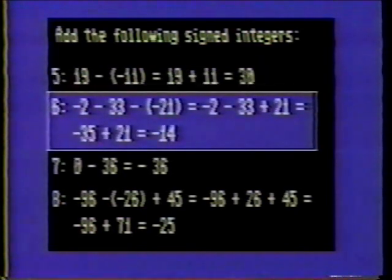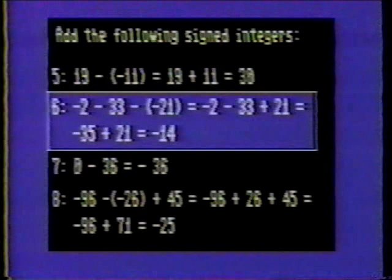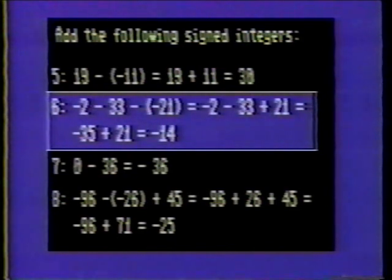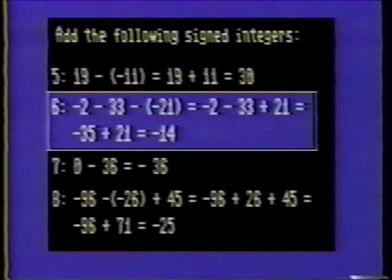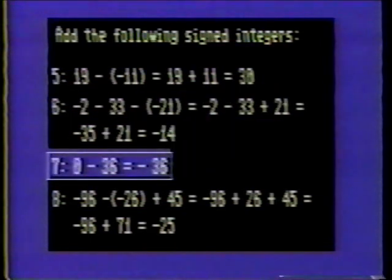Number six: negative two minus thirty-three minus negative twenty-one is negative two minus thirty-three plus twenty-one. Combining numbers with like signs yields negative two minus thirty-three, which is negative thirty-five. Negative thirty-five plus twenty-one is negative fourteen. Number seven: zero minus thirty-six is negative thirty-six.